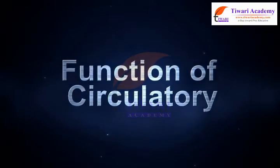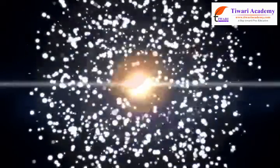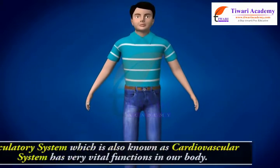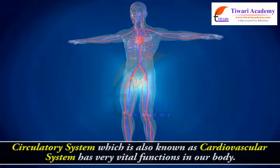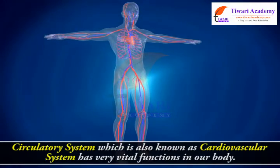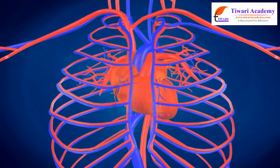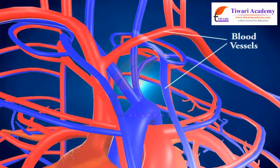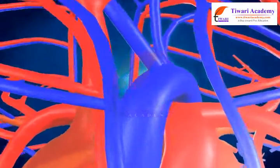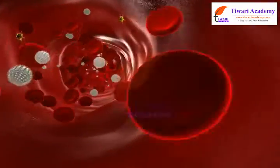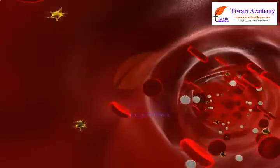The circulatory system, also known as the cardiovascular system, has very vital functions in our body. This system consists of the central organ heart, blood vessels, and the circulating fluid that is blood. Let us now know the important functions of the circulatory system.